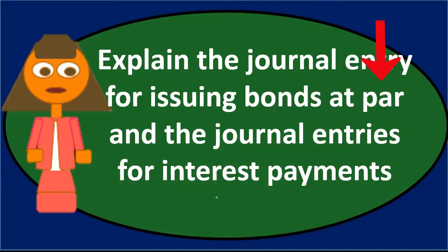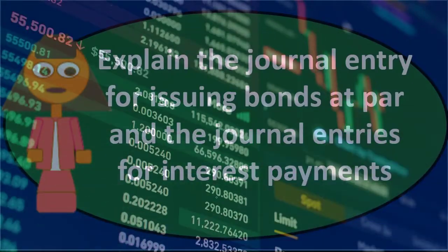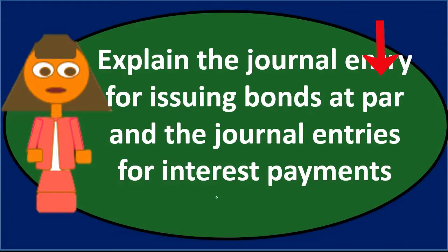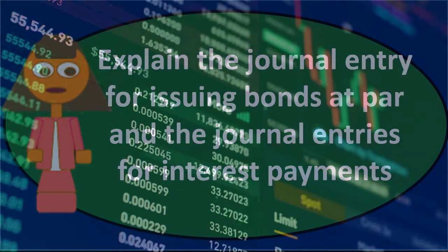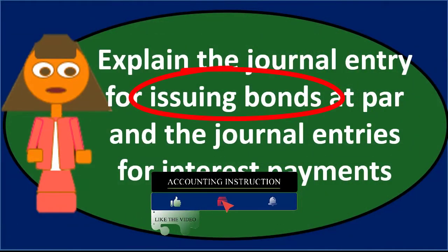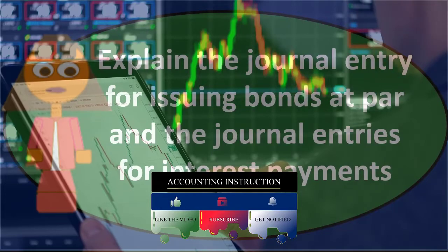There are three ways a bond can be issued: at a discount, at a premium, or at par value. Par value means the market rate is equivalent to the stated rate on the bond — they're the same. Because there's no difference between the two rates, there's no premium or discount; the value of the future cash flow payments equals the par or face amount. This is typically the case when a bond is created and issued on the same date.